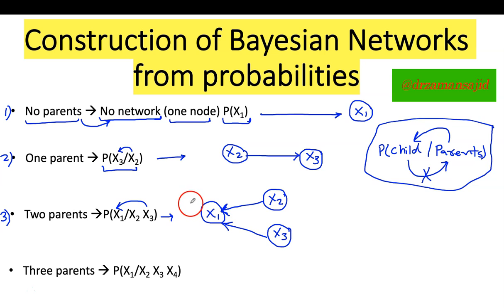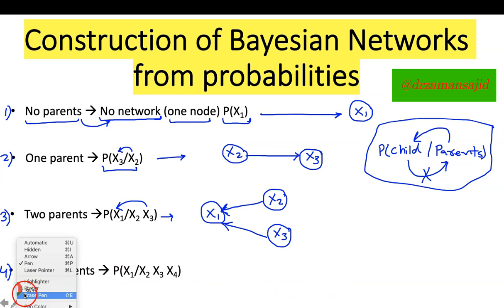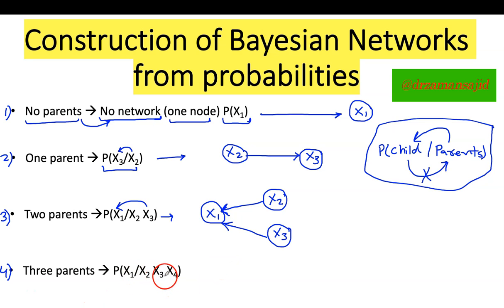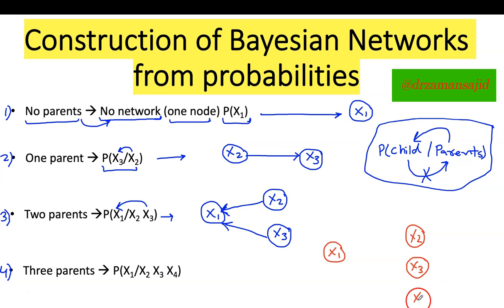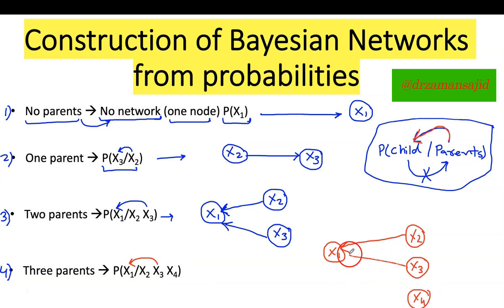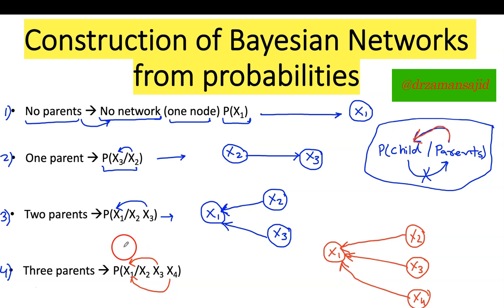In our last Case 4, we have three parents. I have X1, X2, X3, and X4. According to the formula, the direction should be from parent to child. X2 is a parent of X1, so the arrow goes from X2 to X1. X3 is also a parent of X1, so X3 to X1. X4 is also a parent of X1, so X4 to X1. That is how you construct your Bayesian network from probabilities.